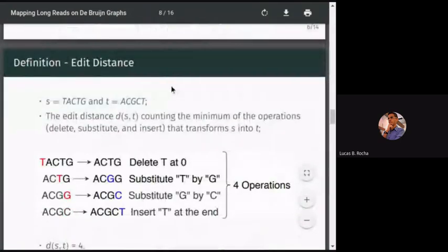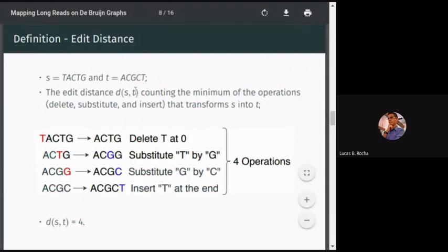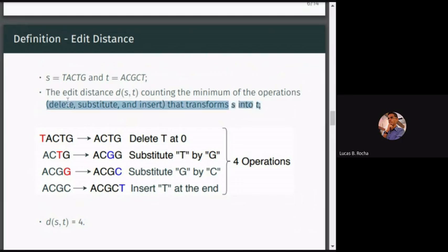Another important definition in bioinformatics is a distance, a similarity between two sequences. For example, edit distance. Edit distance is a way to calculate the similarity between two sequences using operations such as delete, substitute, and insert. If I want to transform S into T, I can remove T at the beginning, substitute T by G, substitute G by C, and insert T at the end. So in four operations I transformed S into T. The edit distance between S and T is four. Now we have other distances, for example Hamming, but I wanted to introduce the definition of at least edit distance.